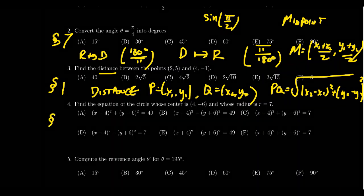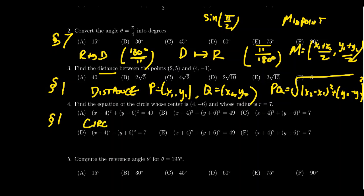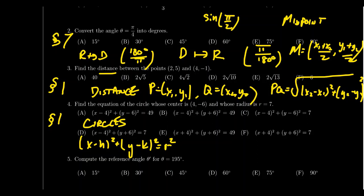Question number four is a continuation focused specifically on circles, which are a very important part of trigonometry. You need to know the equation of a circle: (x − h)² + (y − k)² = r², where r is the radius and (h, k) are the coordinates of the center. You may be asked to create the equation of a circle satisfying certain conditions, or to read information about centers and radii from a given equation.